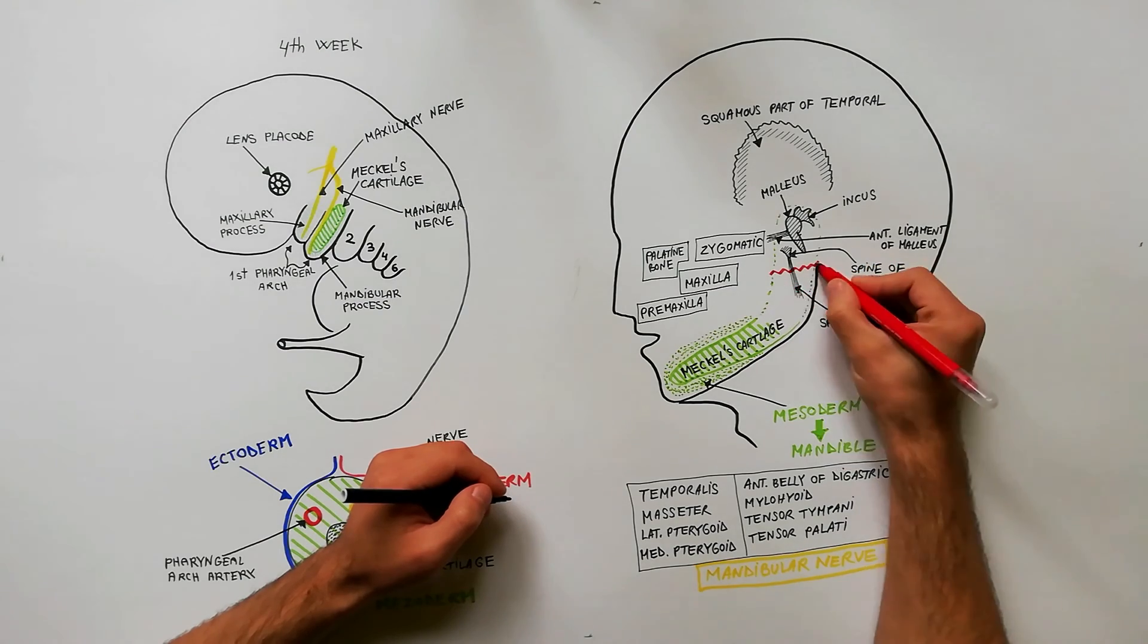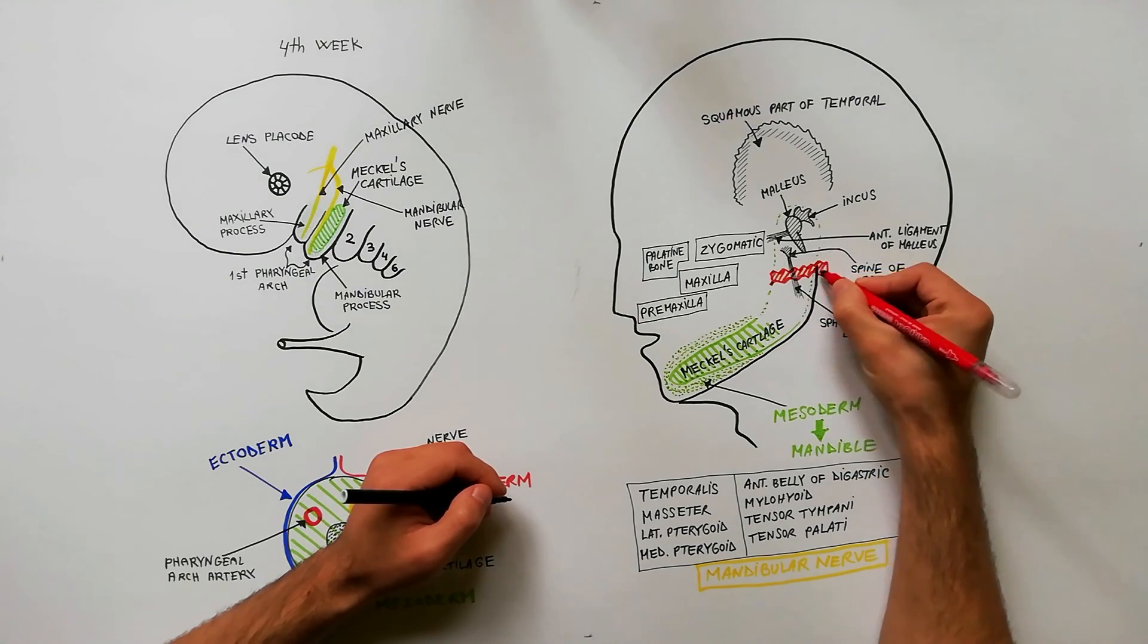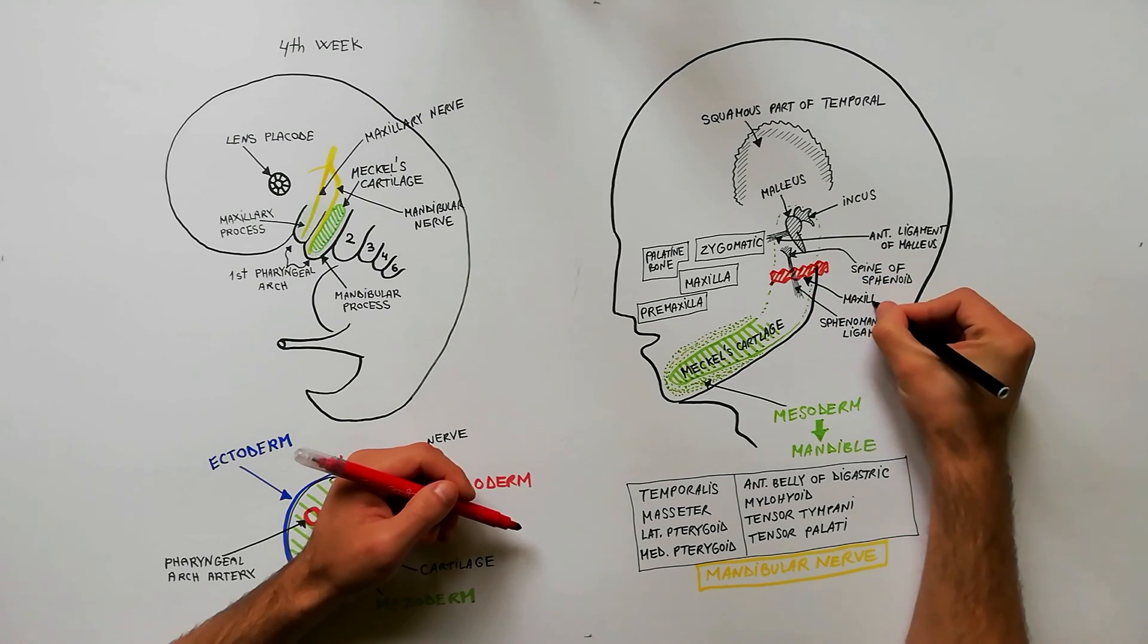The artery of the first pharyngeal arch is the first aortic arch which partially persists as the maxillary artery.